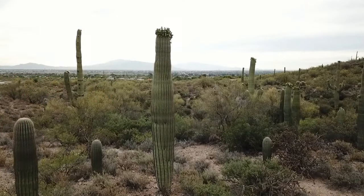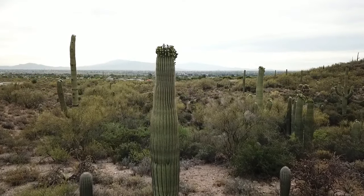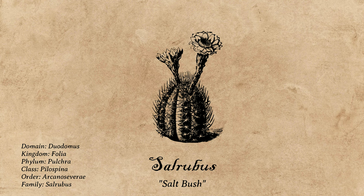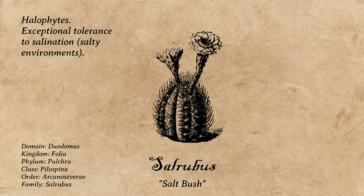There are some clear trends among desert flora when it comes to their characteristics and how they look, so any desert flora we worldbuild for our own projects are likely to be similar. On Locus, the most successful desert flora are the Pilospina, with extremely similar adaptations to cacti on Earth. One of the more interesting types of Pilospina are the Selrubis, which have evolved to become halophytes, meaning that they have exceptional tolerance to salination, or salty environments.